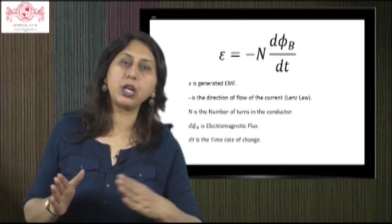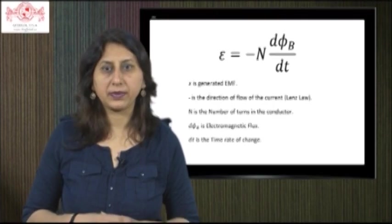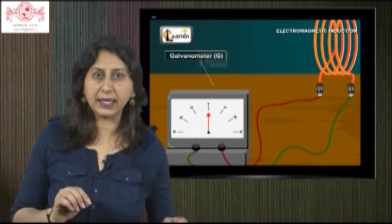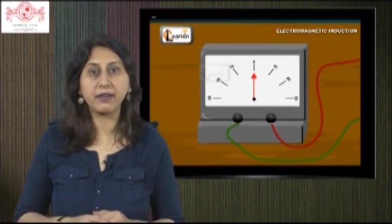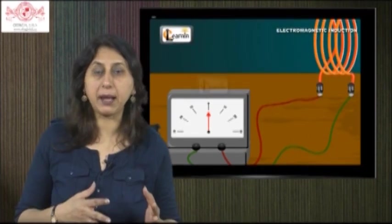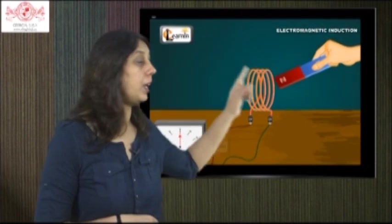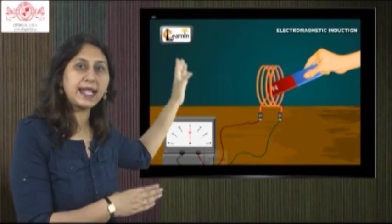Induced EMF: The current produced by the relative motion of the coil or the magnet is called an induced current and is said to be set up by an induced electromotive force or EMF.